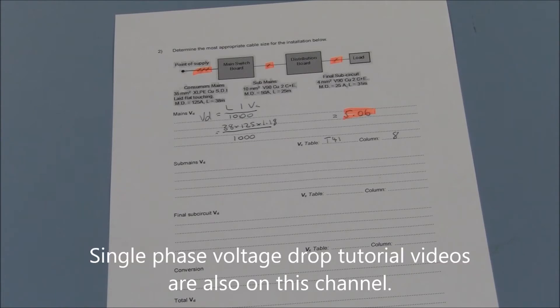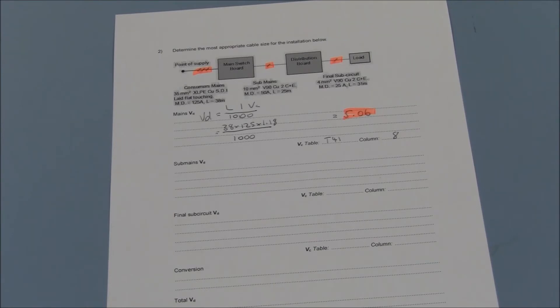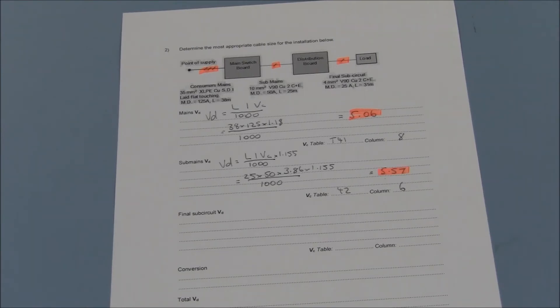Likewise for the single phase sub main, not neglecting to multiply the value of VC by 1.155. This gives us a voltage drop of 5.57 volts. Table 42 column 6 is the reference for this part.